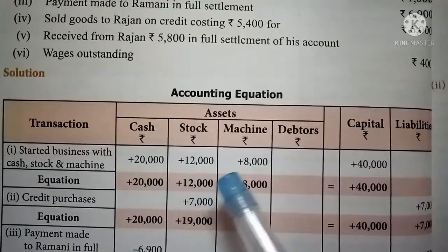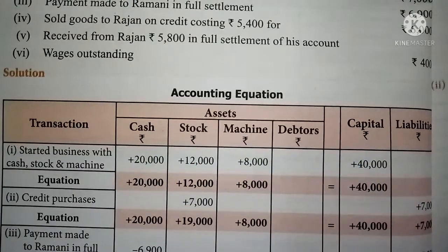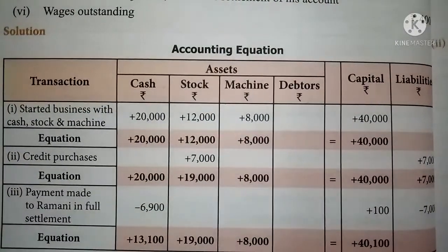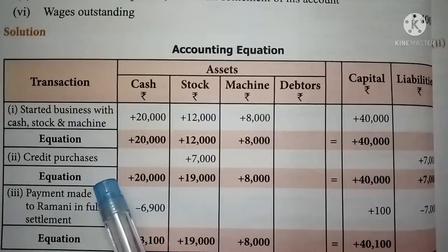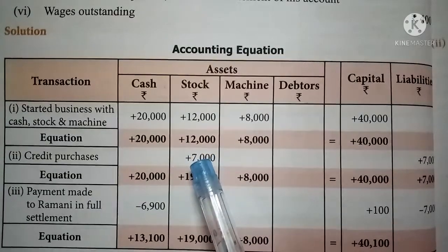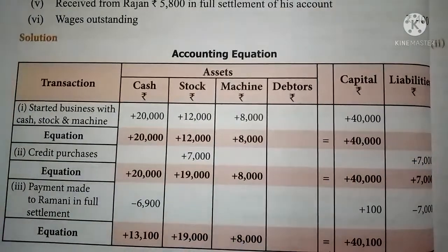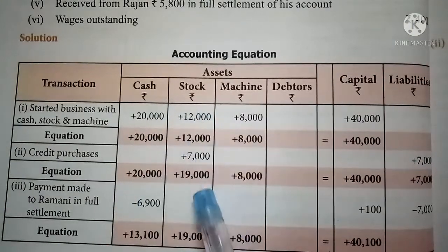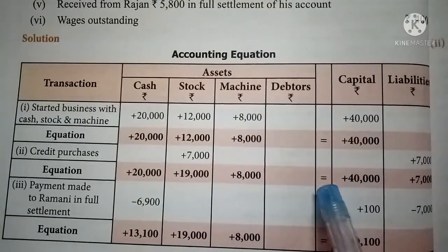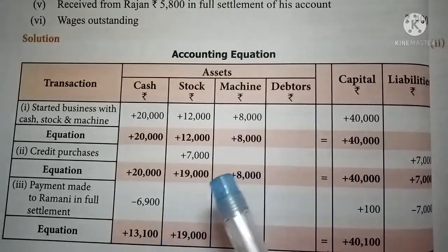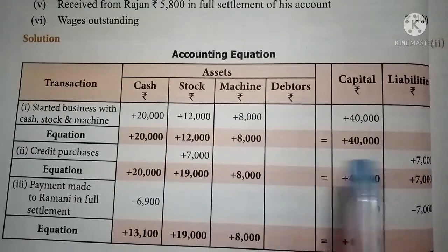Now for the solution. The heading: In the books of Anbu, accounting equation. Transaction 1 — started business with cash 20,000, stock 12,000, machinery 8,000. Total investment is 40,000, which should be written in the capital column. Transaction 2 — credit purchases: add 7,000 to stock column and write 7,000 in the liability (creditor) column. Make the equation: cash 20,000, stock 19,000 (12,000 + 7,000), machinery 8,000, capital 40,000, liability 7,000.